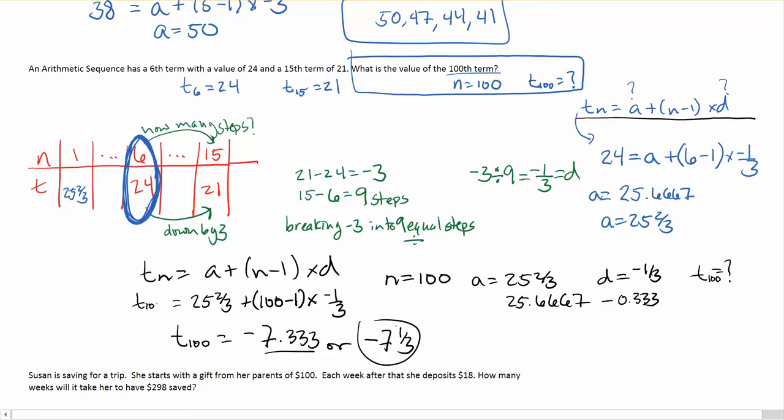So, t sub 100, that 100th term, is equal to negative 7.333, which as a fraction would be negative 7 and 1 third. Either way could work. Whether you've used the decimals or whether you've used the fractions, it'll be okay. In this case, we're not needing to be too precise.